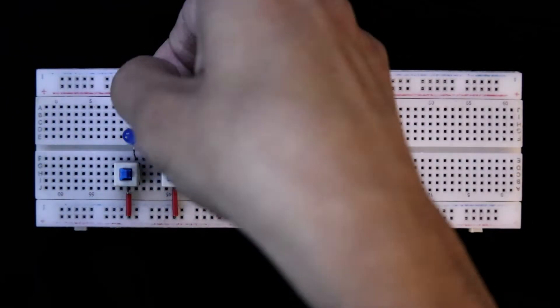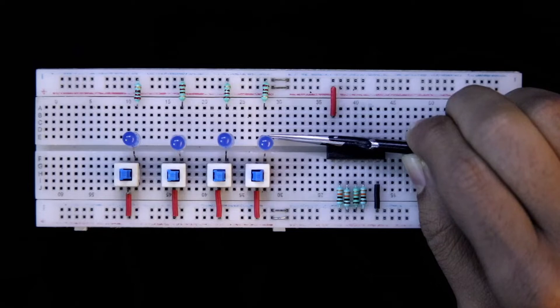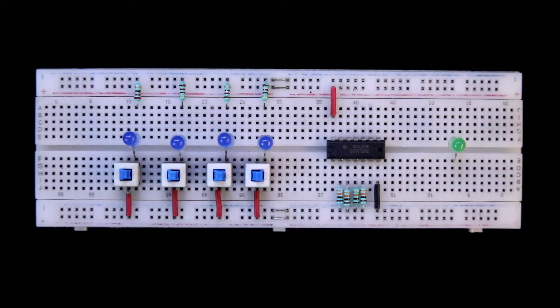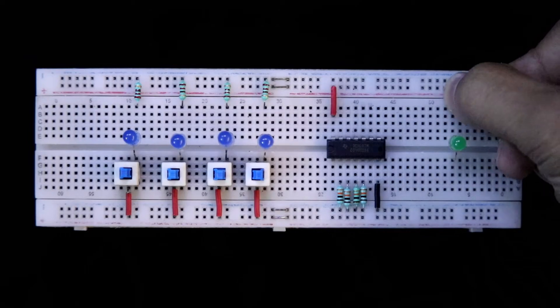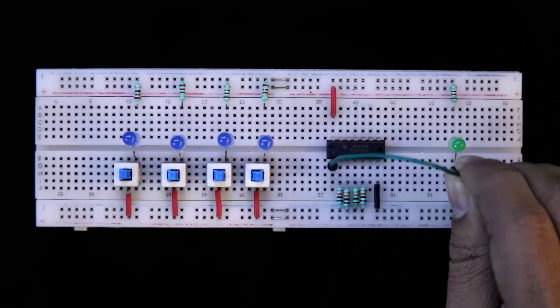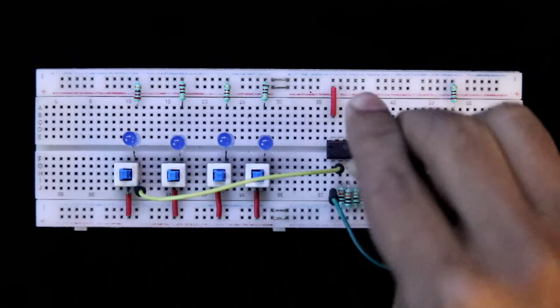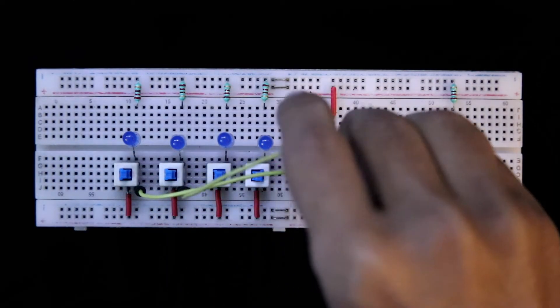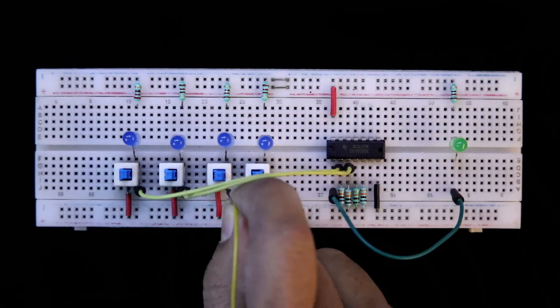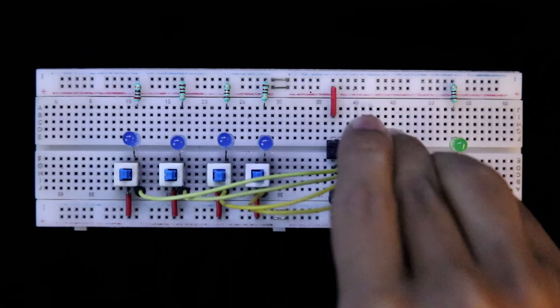Input LEDs with the series resistor. This side is positive and this side is negative. The output LED and the series resistor. This side is positive and this side is negative. Pin number 1 is output, so it's connected to the output LED. Switch A is connected to pin 2, switch B to pin 3, switch C to pin 4, and switch D to pin 5.